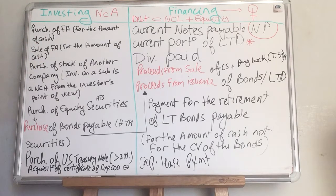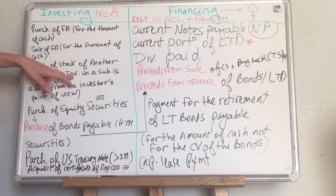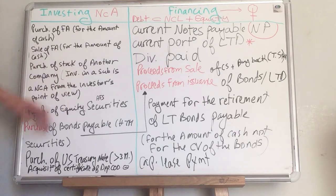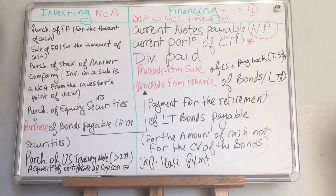So the purchase of fixed assets and the sale of fixed assets are reported in the investing section for the amount of cash. Also, the purchase of stock of another company — investment in stock — is a non-current asset from the investor's point of view.